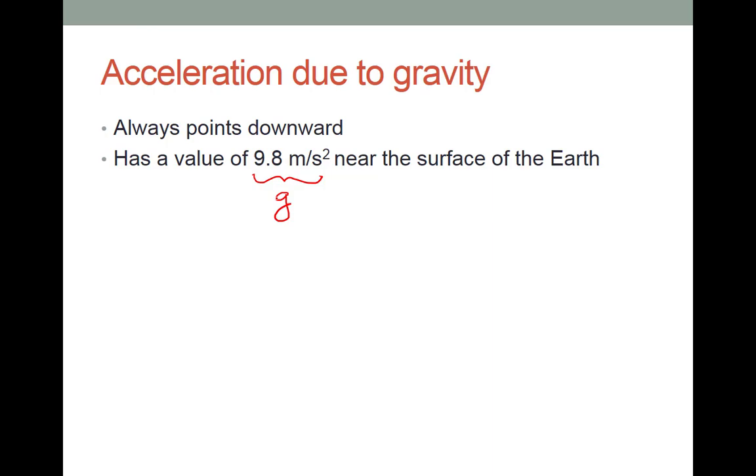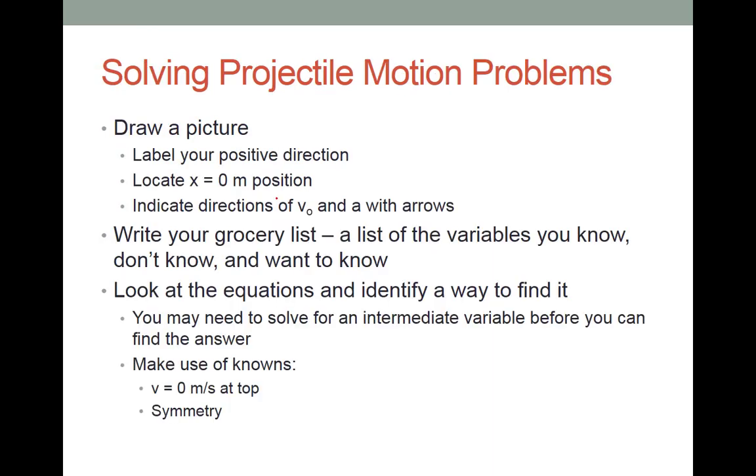I said last part that I would give you a slide on how to work these constant acceleration problems. So here is that slide. You saw me model it last time. Draw a picture. Make sure you define your positive direction. Choose your position for x equals zero. That's your choice. Unless the problem specifically states put it somewhere, then put it somewhere. Indicate with arrows the directions of your initial velocity and your acceleration. You may know values as well, and if you do, you can put them on. But bare minimum, indicate their directions so that you can think about them in your coordinate system.